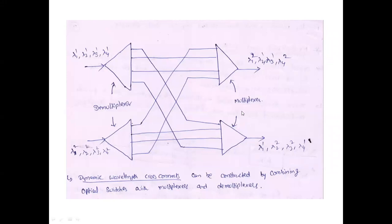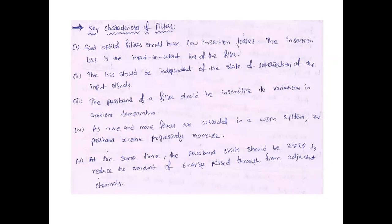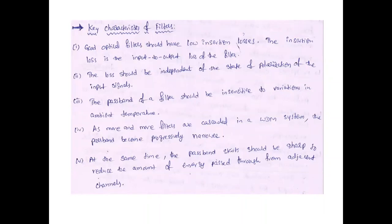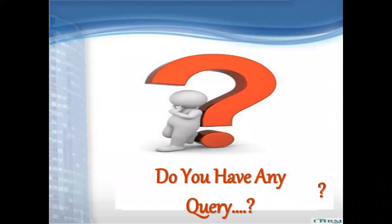A good optical filter should have low insertion losses, losses should be independent of the state of polarization, and the passband of the filter should be insensitive to temperature variations. Filters are used in WDM (Wavelength Division Multiplexing) systems to sharply reduce the amount of energy passed through from adjacent channels. Key characteristics: low insertion loss, independence from polarization state, temperature insensitivity, and effective suppression of adjacent channel signals.